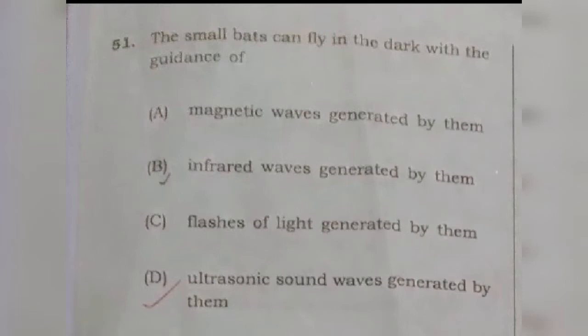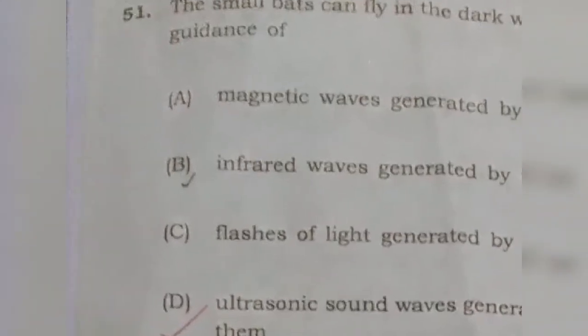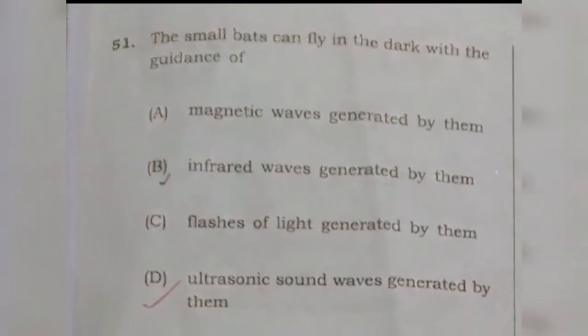Question number 51: Small bats can fly in the dark with the guidance of which option? The answer is D, which is ultrasonic sound waves generated by them.